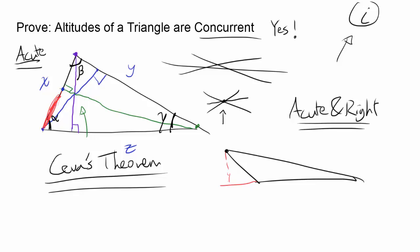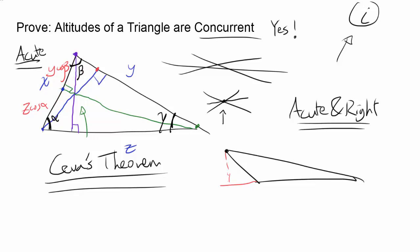This length is equal to Z times cosine of alpha, because in that right triangle the hypotenuse is Z and the adjacent angle is alpha. For this length, looking at that triangle, you get Y times cosine of beta. What about this length? Looking at that triangle, you get X cosine of beta. You can keep going: this length is Z cosine of gamma, this length is Y cosine of gamma, and this length is X cosine of alpha.